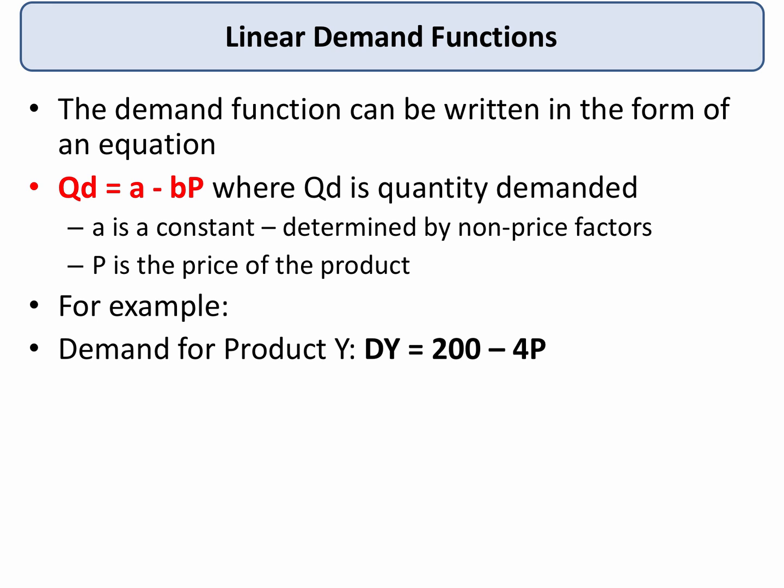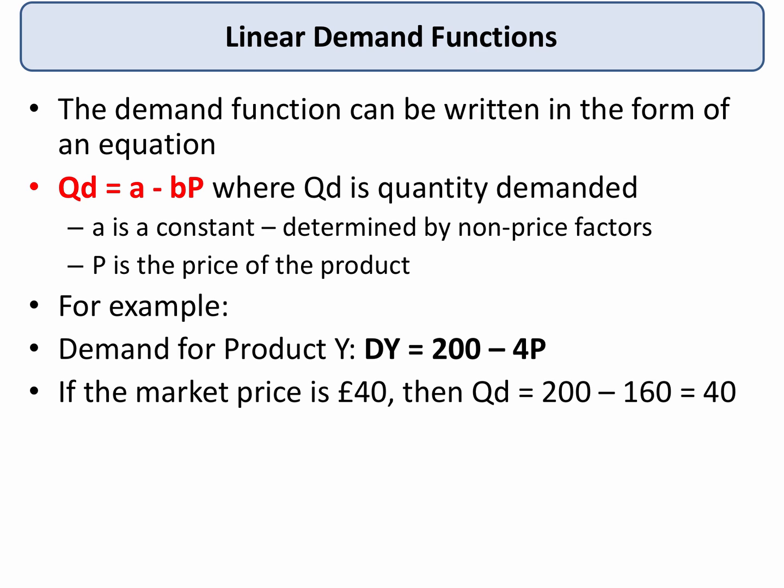For example, we might write the demand for product Y as: DY equals 200 minus 4P. So if the market price for Y is £40, putting that into the equation: quantity demanded equals 200 minus 4 times 40, which is 200 minus 160, equals 40. At a price of £40, consumers will be buying 40 units of Y.